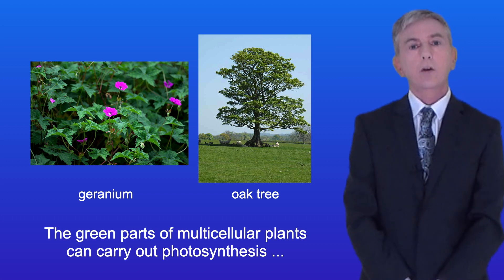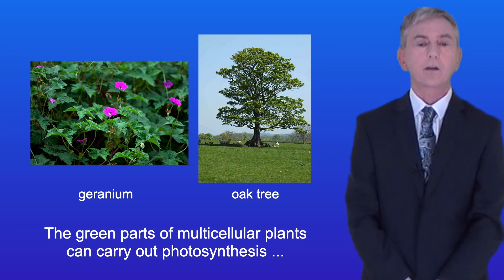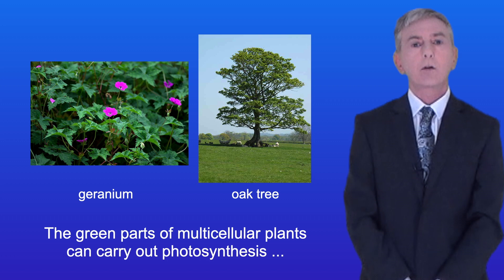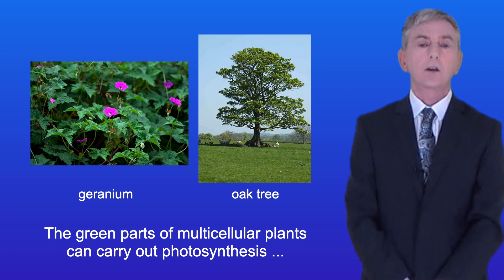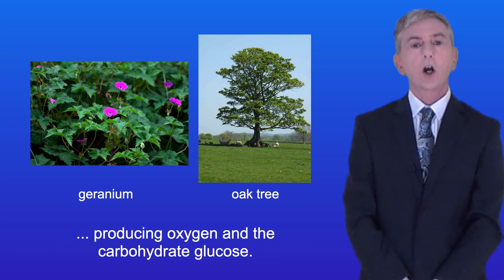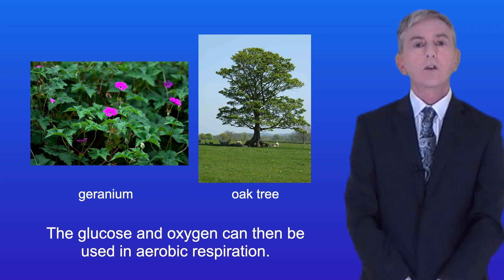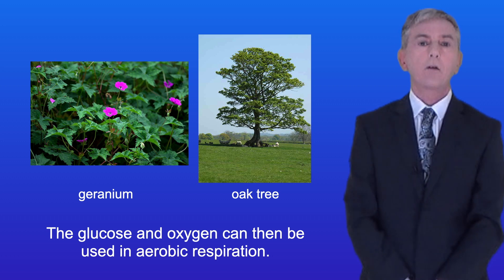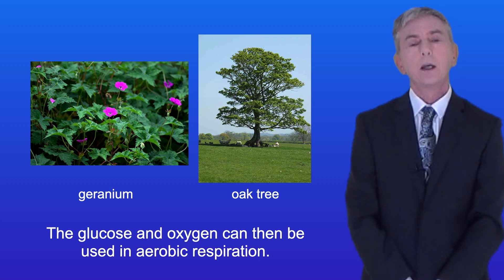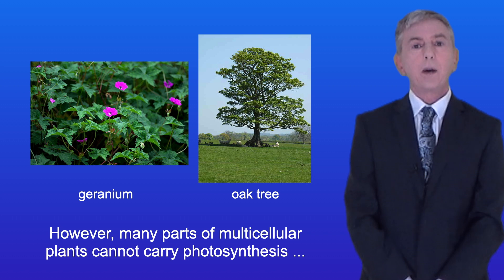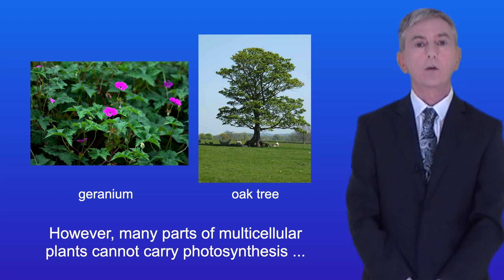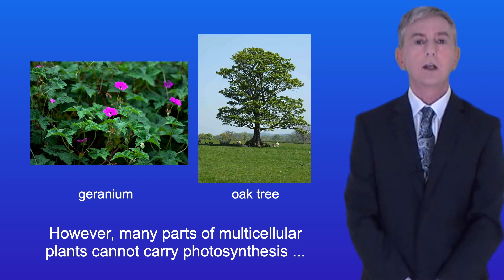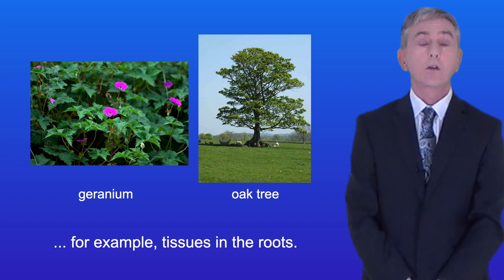Now the green parts of multicellular plants can carry out photosynthesis producing oxygen and the carbohydrate glucose. The glucose and oxygen can then be used in aerobic respiration. However many parts of multicellular plants cannot carry out photosynthesis, for example tissues in the roots.